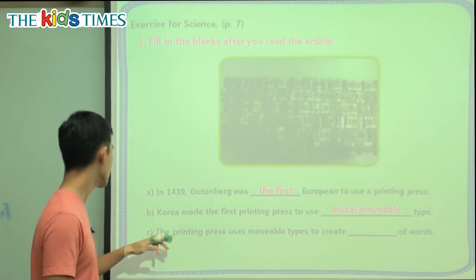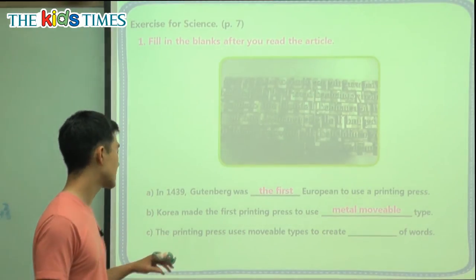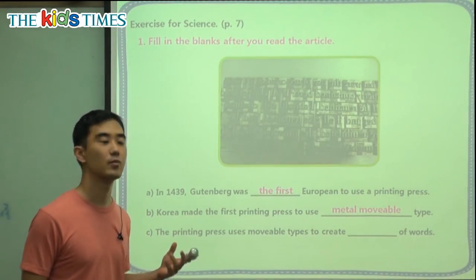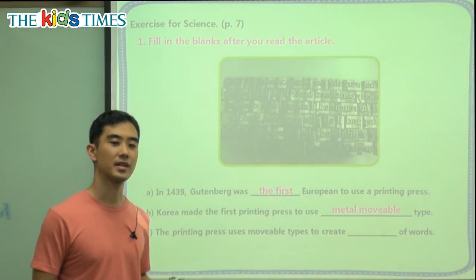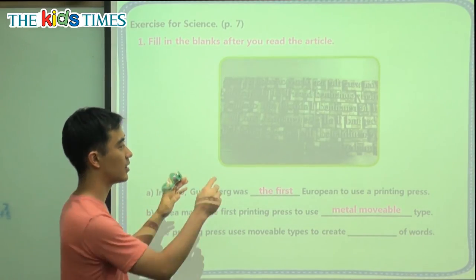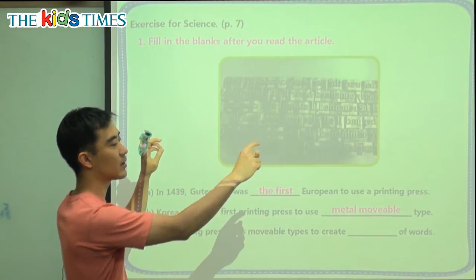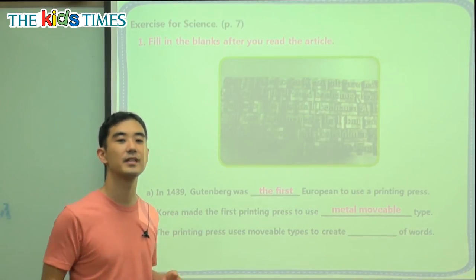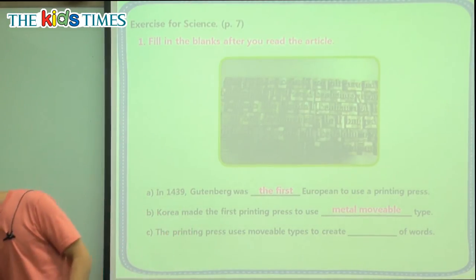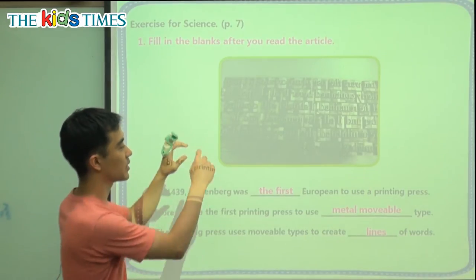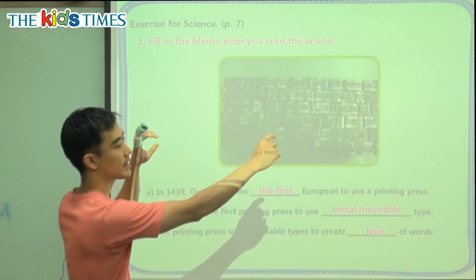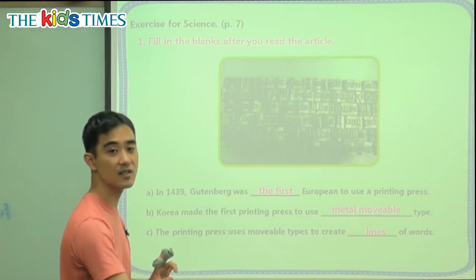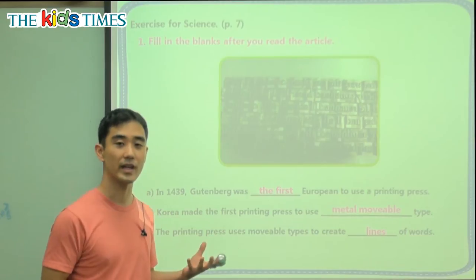Question C: The printing press uses movable types to create blanks of words. Think about a book — when we're reading a book, it's usually more than one page, more than one paragraph, more than one line. Lines of words means we write here and there's one line, then we go further and there's two lines. We're writing lines of a story.